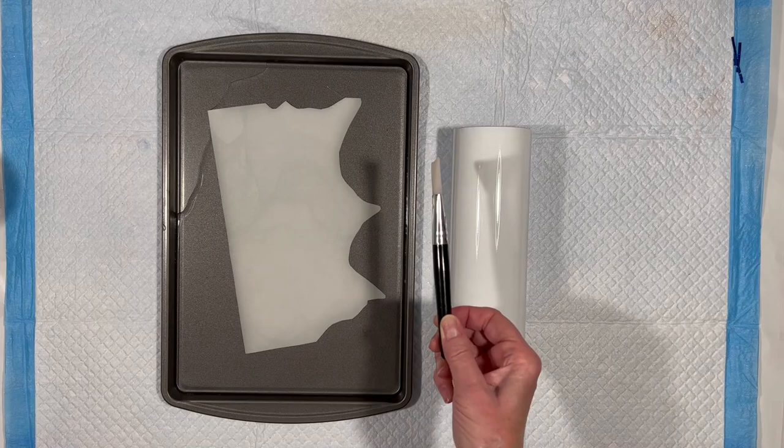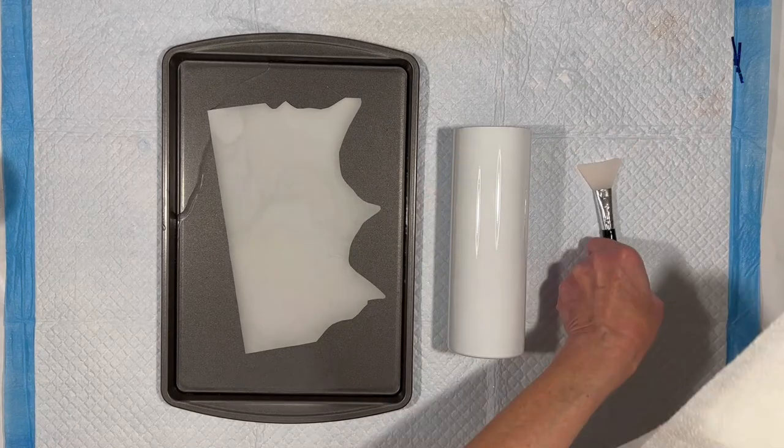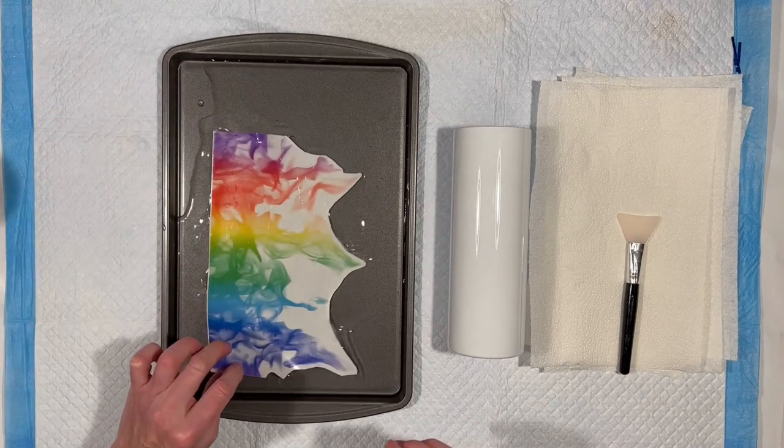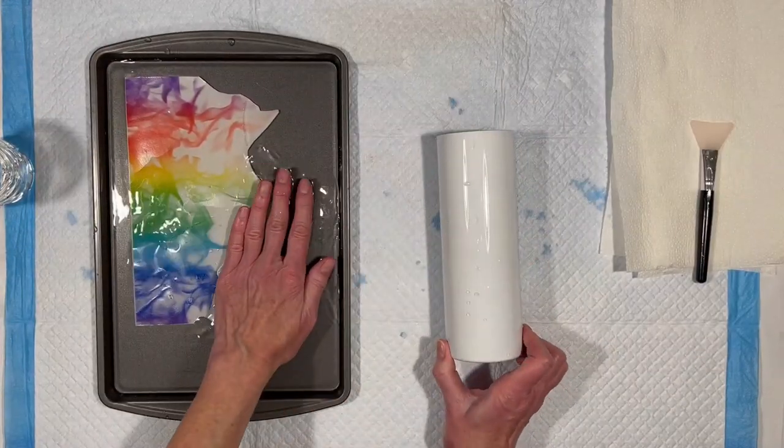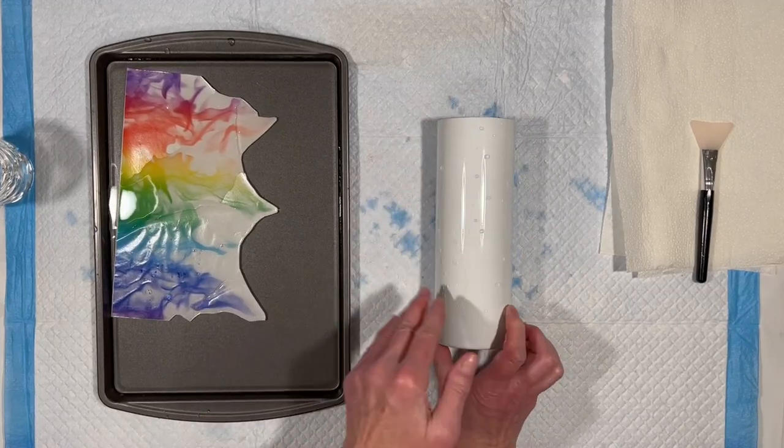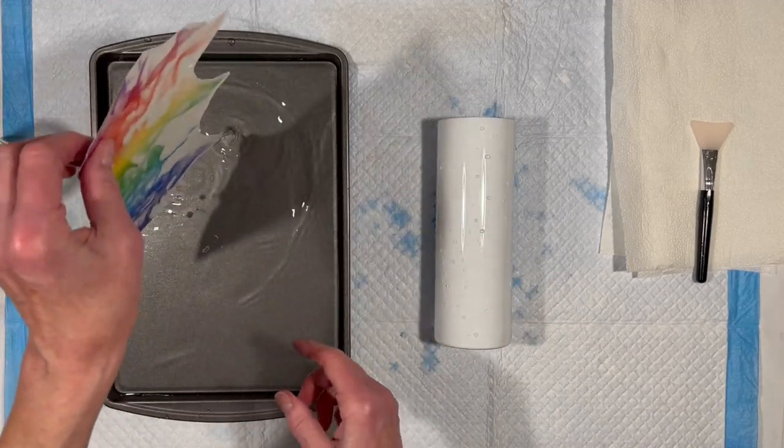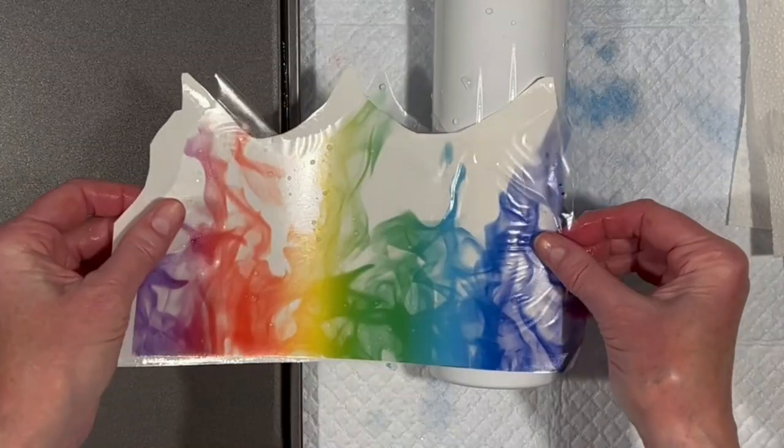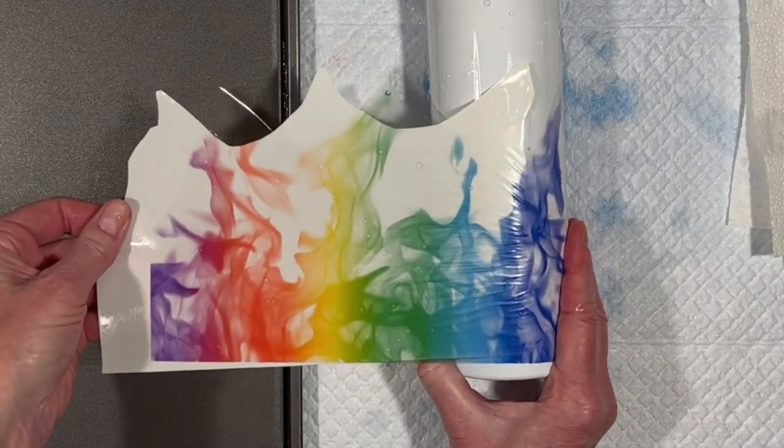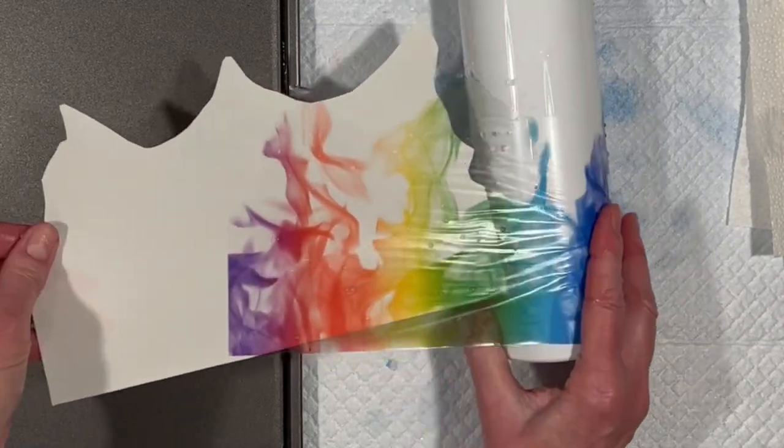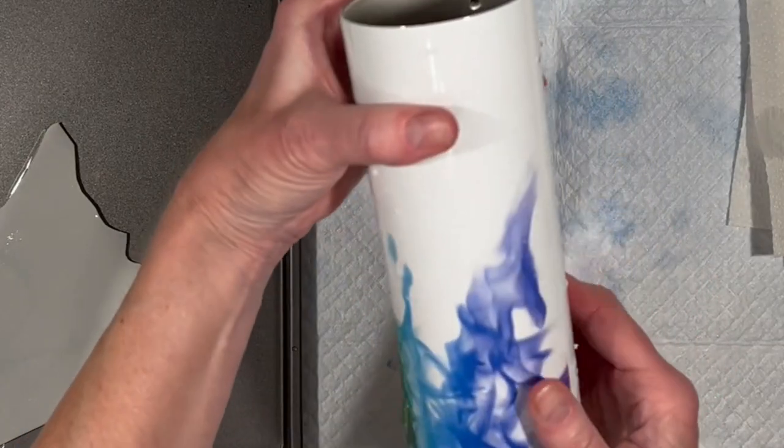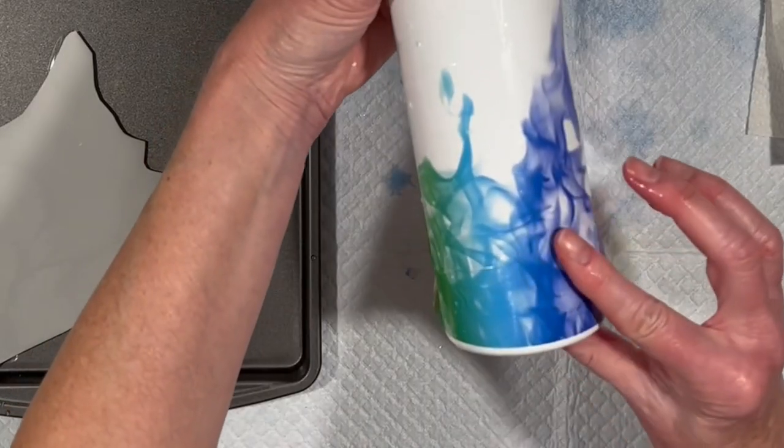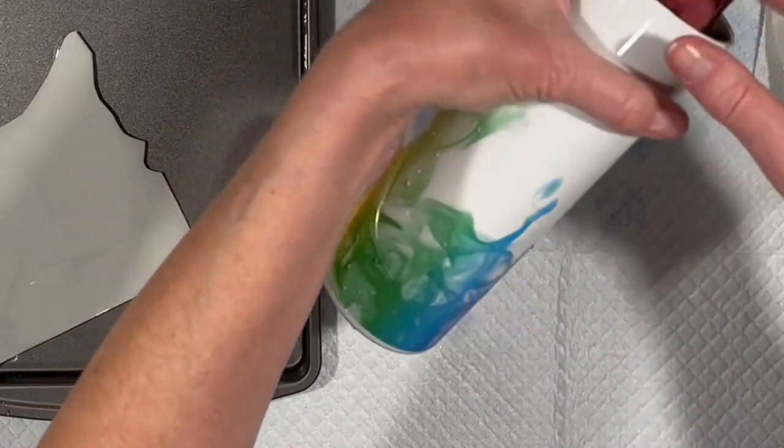I have my silicone brush, which doubles as a squeegee tool for water slides. Get some paper towels. Start by getting the cup wet, so the water slide will move around on it, so I can manipulate it for placement purposes. I do want it towards the bottom, but not necessarily at the very bottom rim, a little above the bottom.